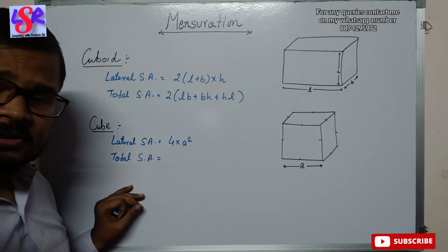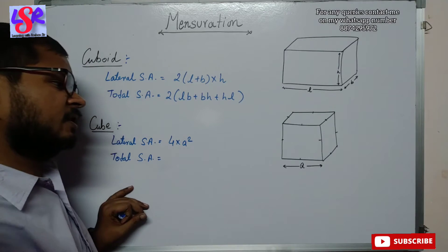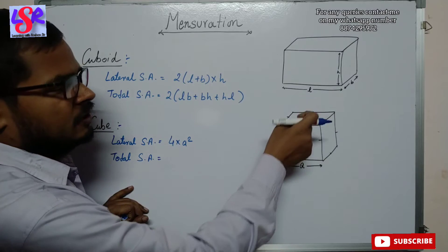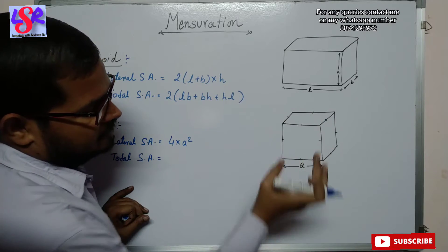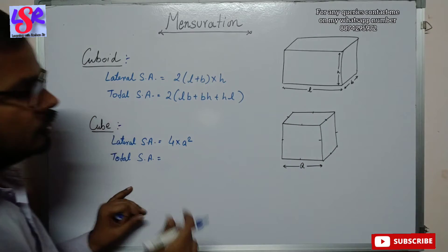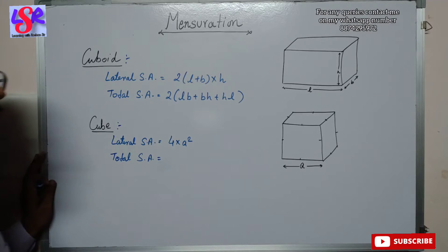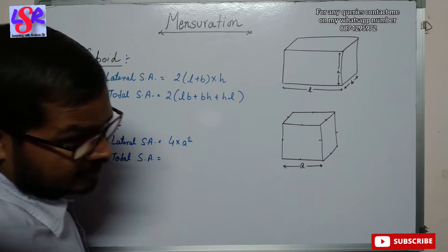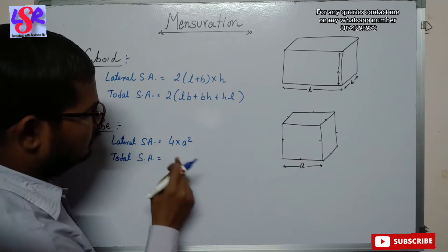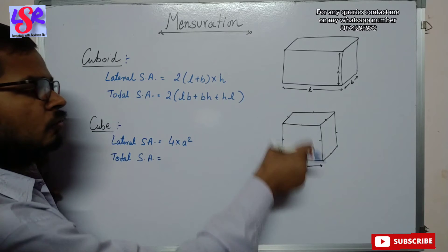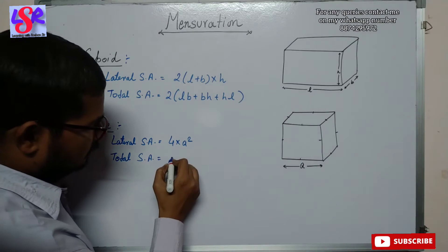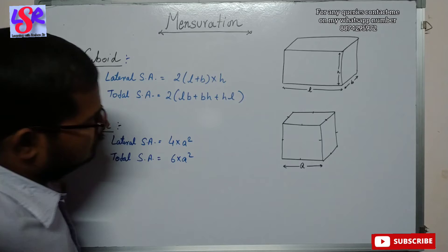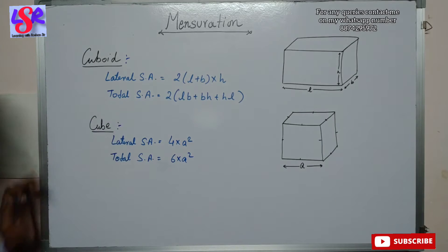For the total surface area of a cube, along with the lateral surface area we include the top and base surfaces as well. The top surface has area A² and the base also has area A², so we add 2A² to the lateral surface area of 4A², giving us a total surface area of 6A².